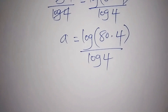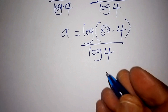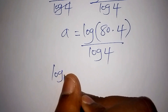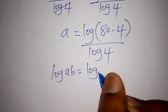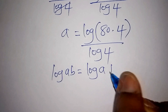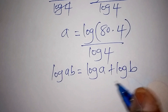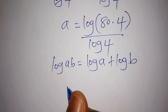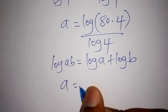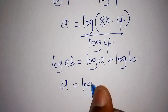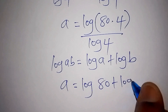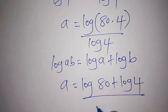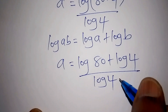Now let me take you through an example. When we have log(AB), this can also be written as log A plus log B. So now we shall rewrite a equals log(80 × 4) all over log 4 as log 80 plus log 4, all over log 4.